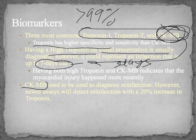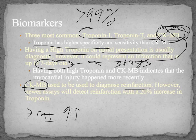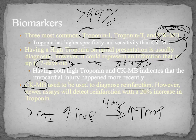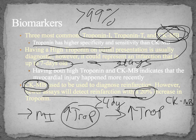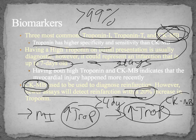Newer assays will detect re-infarction with higher specificity and sensitivity when the troponin increases by 20%. So even if troponin didn't go down, if it goes up by 20% or more, that's a re-infarction — you don't need to do extra labs.